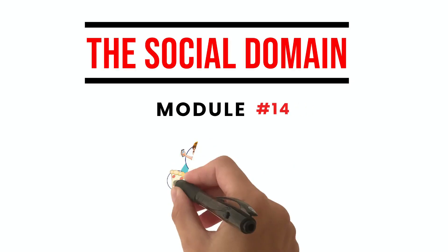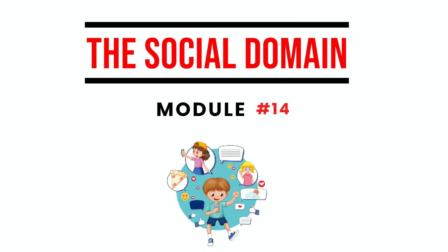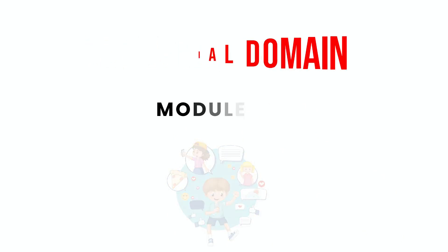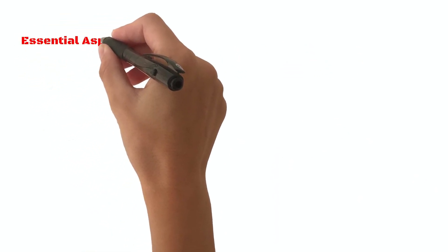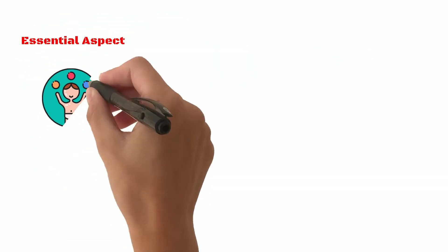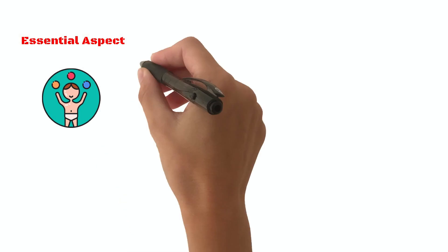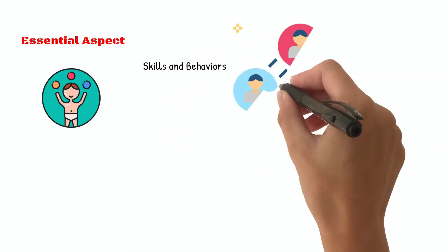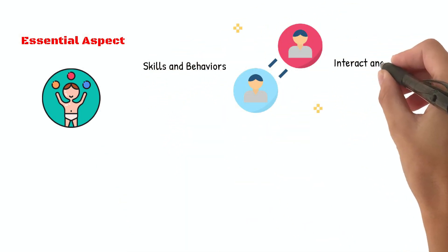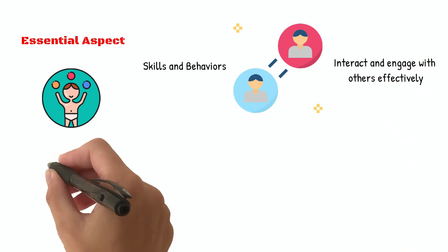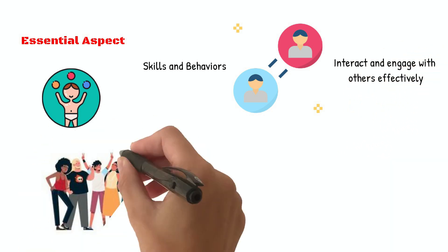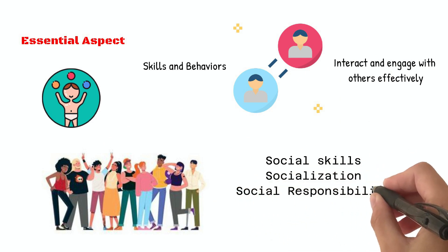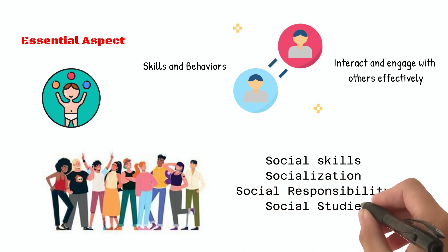Module 14: The Social Domain. The social domain is an essential aspect of child development. It encompasses various skills and behaviors that are critical for children to interact and engage with others effectively. The social domain includes social skills, socialization, social responsibility, and social studies.